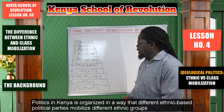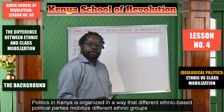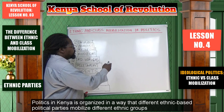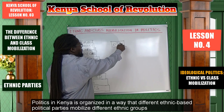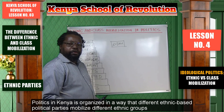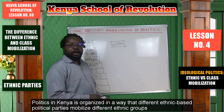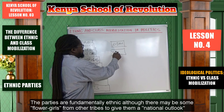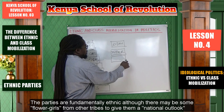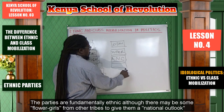So you have one party here calling itself ODM, and of course it is known that it belongs to the Luos, although it can have some supporters from Luyia, from Kamba, etc. Then you have another party here called Wiper, which is for the Kambas. Then you have another party here called ANC for the Luyias.